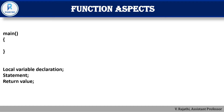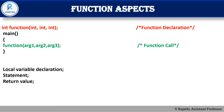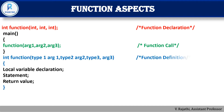An important note: the semicolon is used when declaring and calling a function. The semicolon is not present in the function definition. In a complete program showing all three aspects: function declaration ends with semicolon, function call also ends with semicolon, and function definition has no semicolon. Function declaration is optional, but function definition and function call are important.